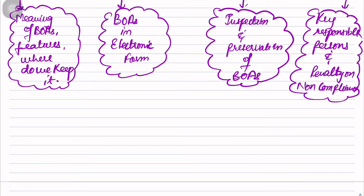Whenever the word 'Books of Accounts' comes to your mind, Section 128 says three things should come to mind: assets-liabilities, sales-purchase, receipts and payments - which you can also call income and expenditures. So the three things are: statement of assets and liabilities, statement of sales and purchase, and statement of incomes and expenditures, also known as receipts and payments. Additionally, the fourth thing is cost records, if any.